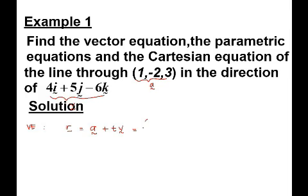So it is actually equal to, write down in matrix form which is (1, -2, 3) plus t times (4, 5, -6). So this is the vector equation and parametric equation is...